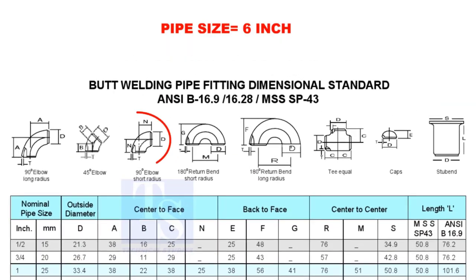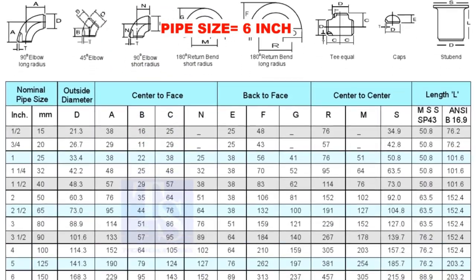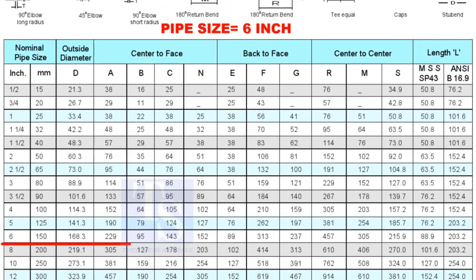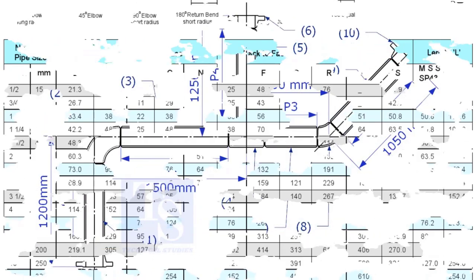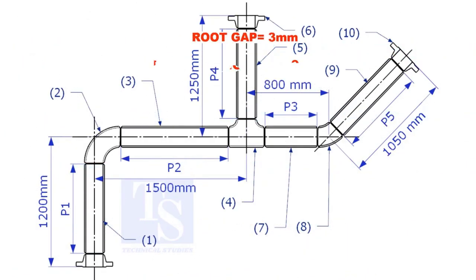Check the takeoff length of the elbow. It is 229mm. Assume the root gap is 3mm.